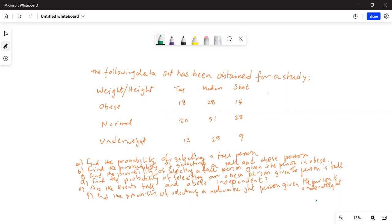First we have to find the probability of selecting a tall person. In order to do that, we have to total each column and total each row. So we have to find the total.